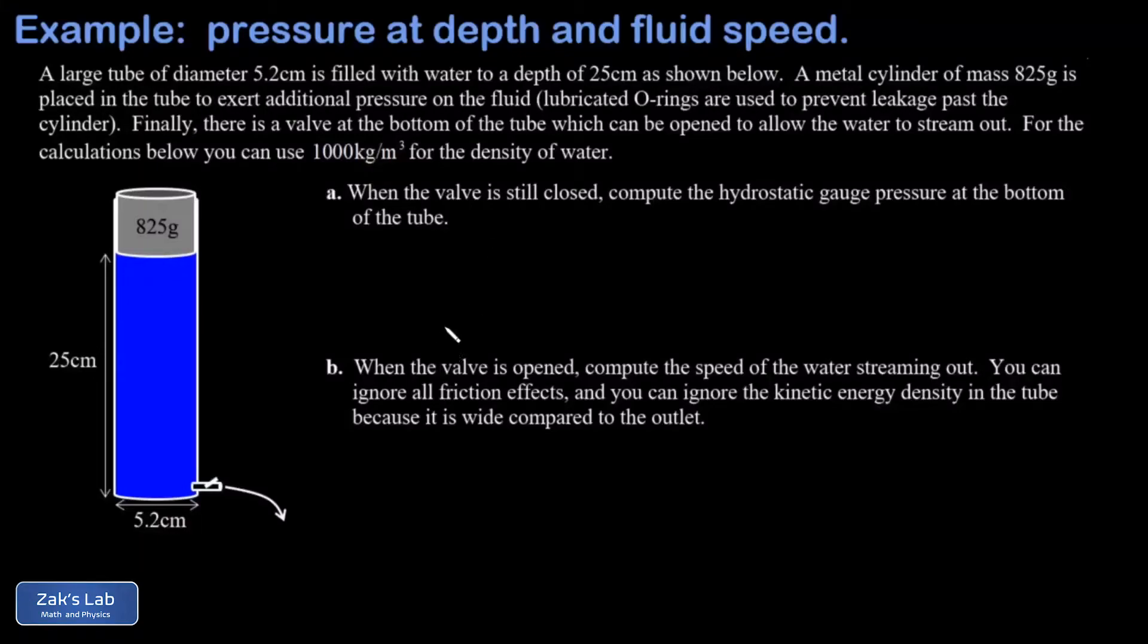In this video we're given a large tube filled with water, using a density of 1,000 kilograms per cubic meter. We've placed a metal cylinder on top of the water, sealed with O-rings so the water can't leak past it. The pressure at the top of the water column has to be sufficient to hold up that metal cylinder, making the pressure greater in the water than it would be otherwise.